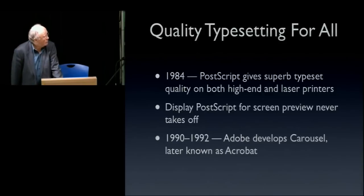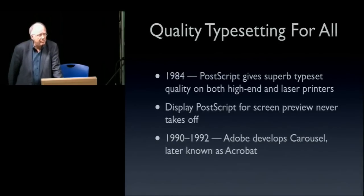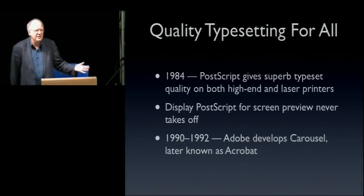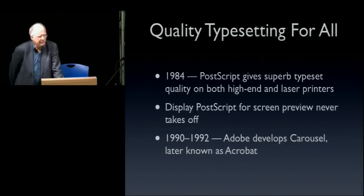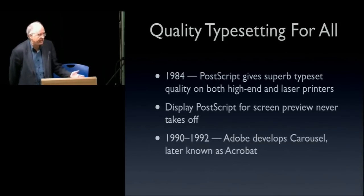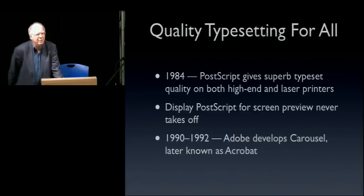PostScript gave the ability to have really high quality typeset documents, coming out on 300 DPI devices like the Apple LaserWriter. But soon after 1984, many wanted the ability to preview on increasingly good workstation screens without committing to print. For various technical and political reasons, Display PostScript never really caught on. But fairly shortly after, Adobe did it right — developing a thing originally called Carousel, which had to be dropped when Kodak threatened to sue, and that became Acrobat with its underlying format PDF.